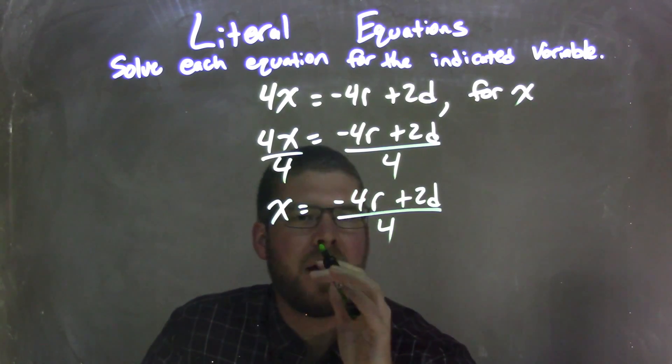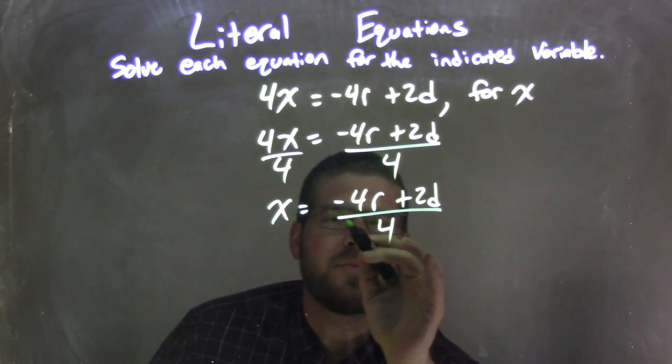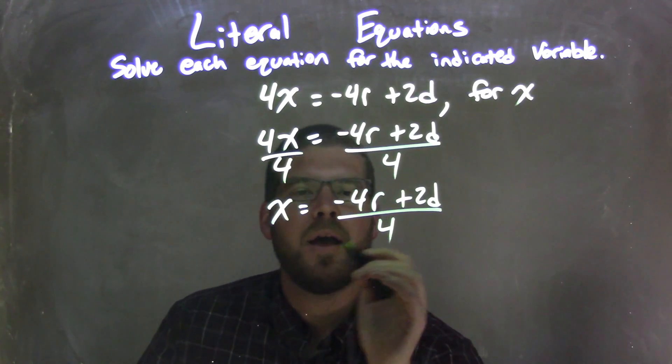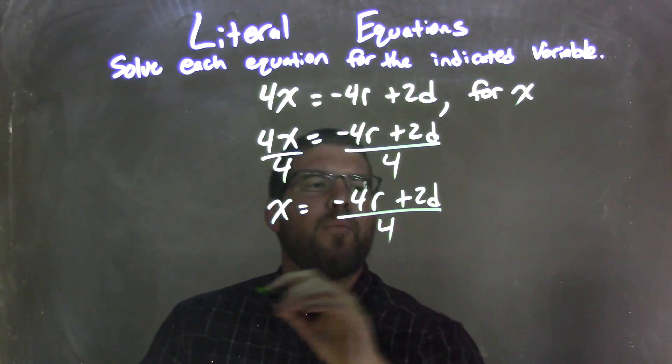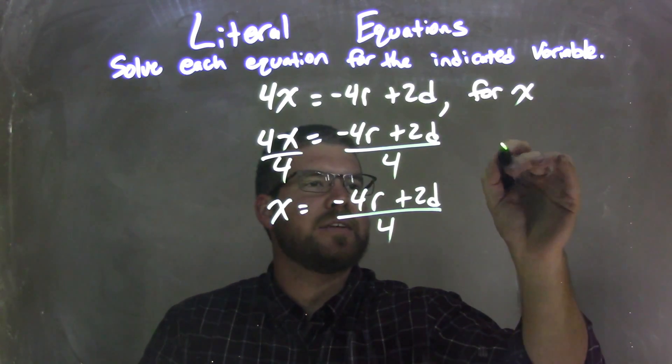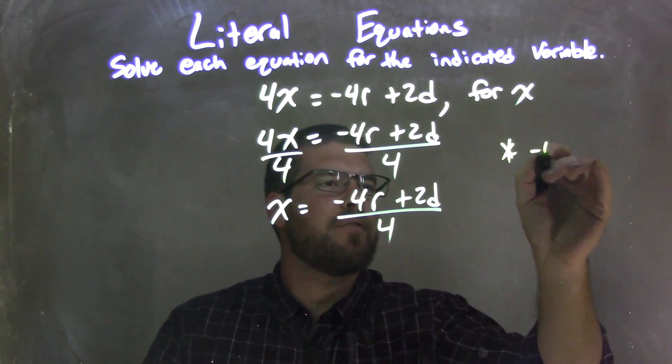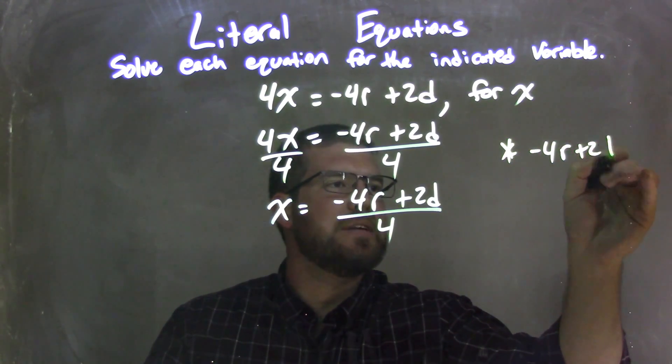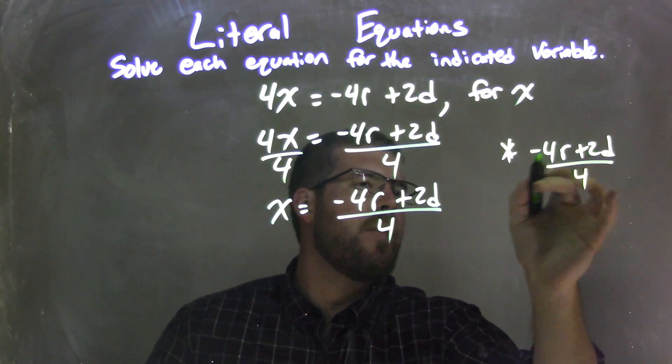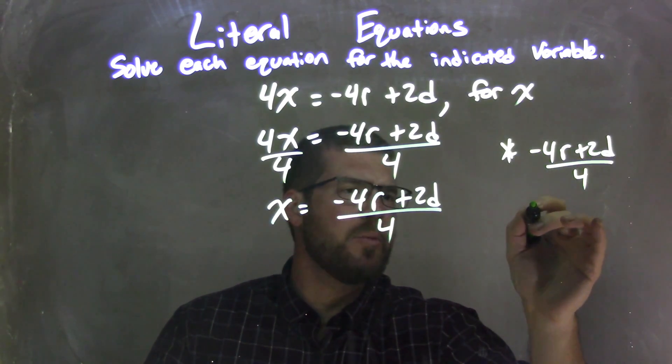There's a few ways to go about it. Some people like to divide all parts by 2, and you can simplify it that way. But what you might want to see on the side here, so you can see what's going on, I'm going to take that negative 4r plus 2d over 4, and I'm going to take the upper part here, the numerator,